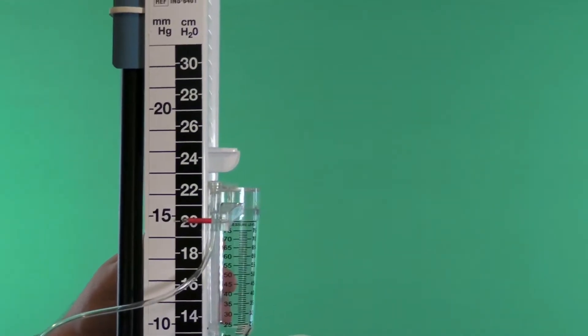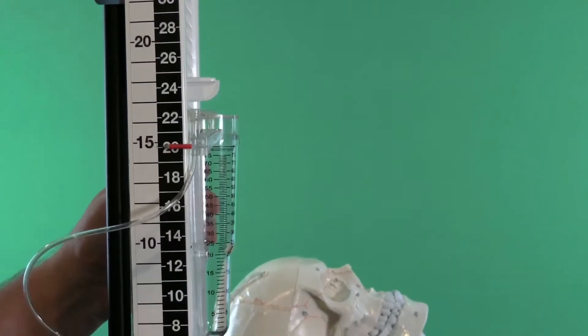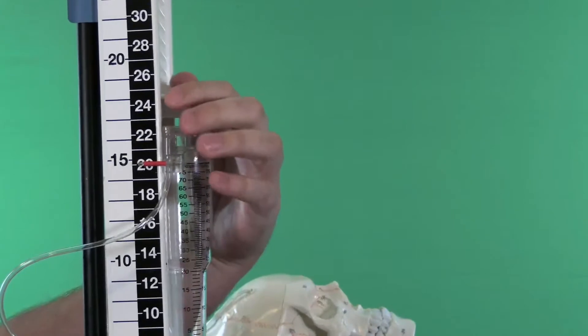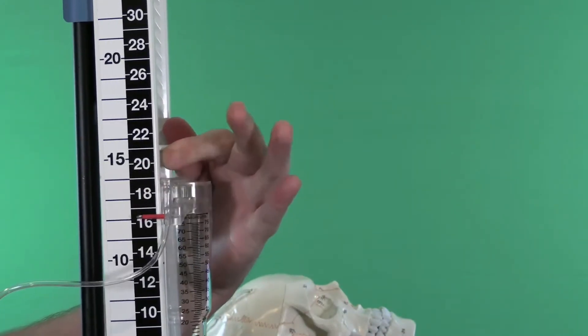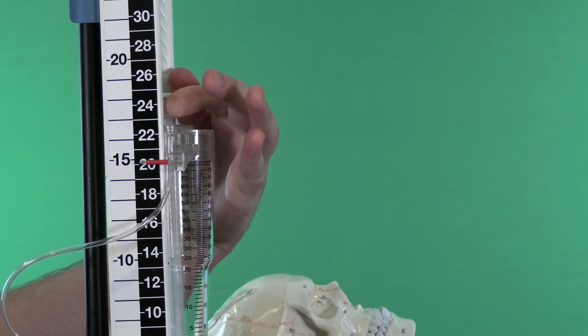You have millimeters of mercury and then you have centimeters of water. The centimeters of water is going to be on this side here, this black side, and there's a little thing that I can pinch. Then I can change where I want this to drain at.